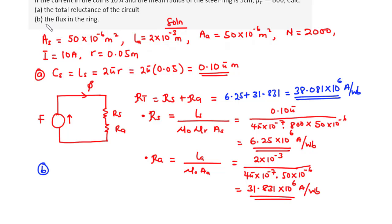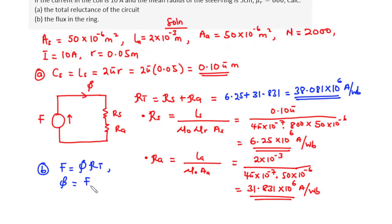For part B, we find the flux in the ring. Because the reluctance of the steel ring is in series with the reluctance of the air gap, the flux is the same throughout the entire circuit. We know that the magnetomotive force F equals the magnetic flux times the total reluctance. We know RT, but we need to find F first, so that from flux = F / RT we can find the flux in the ring.